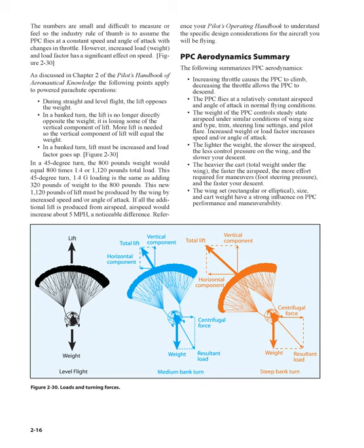PPC Aerodynamics Summary: Increasing throttle causes the PPC to climb; decreasing throttle allows the PPC to descend. The PPC flies at a relatively constant airspeed and angle of attack in normal flying conditions. The weight of the PPC controls steady-state airspeed under similar conditions of wing size and type, trim, steering line settings, and pilot flare. Increased weight or load factor increases speed and/or angle of attack. The lighter the weight, the slower the airspeed, the less control pressure on the wing, and the slower your descent. The heavier the cart — total weight under the wing — the faster the airspeed, the more effort required for maneuvers, and the faster your descent. The wingset — rectangular or elliptical size — and cart weight have a strong influence on PPC performance and maneuverability.